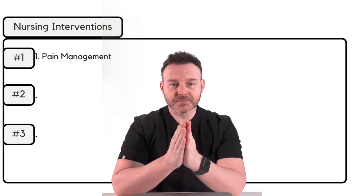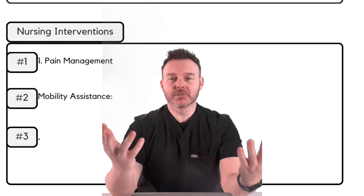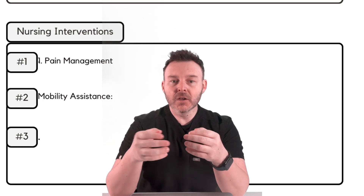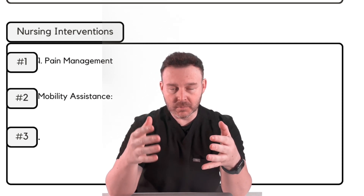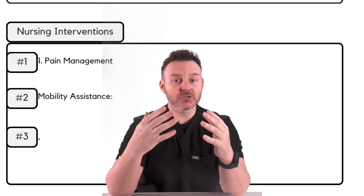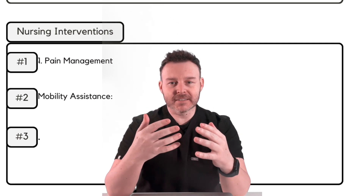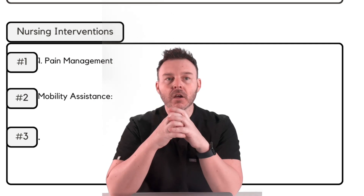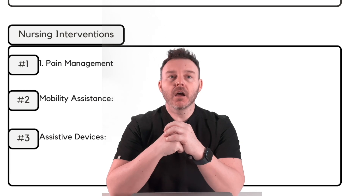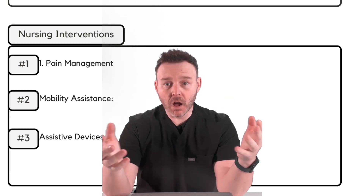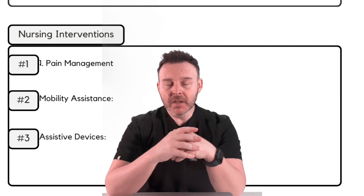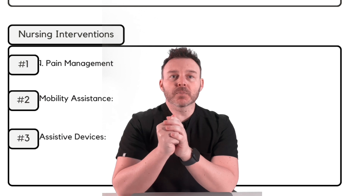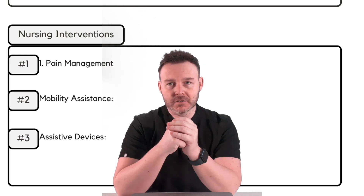Another intervention is mobility assistance. As a nurse, we can perform and assist with passive range of motion exercises on the unaffected side, collaborate with physical therapy on a customized rehabilitation plan, and educate the patient on proper body mechanics and techniques for safe movement — both before and after surgery. We can also provide and educate the patient on the use of assistive devices such as a walker, crutch, or cane. These devices should be properly adjusted to the correct height, covering their entire hospital stay.